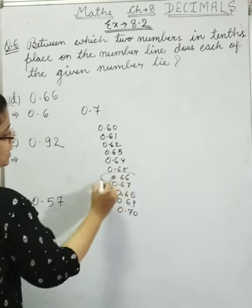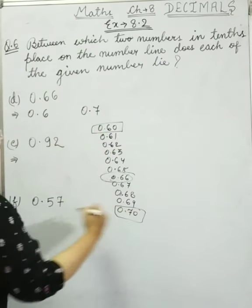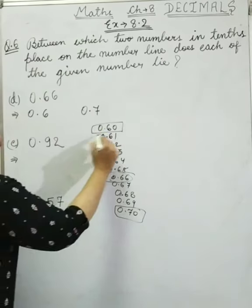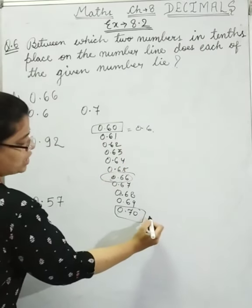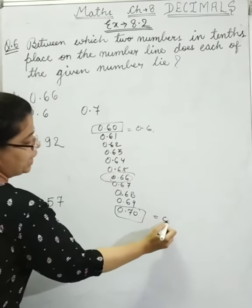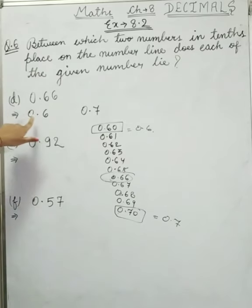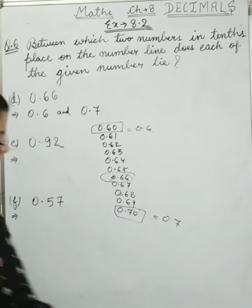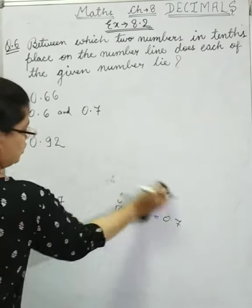So 0.66 lies between 0.60 and 0.70, which means 0.6 and 0.7.